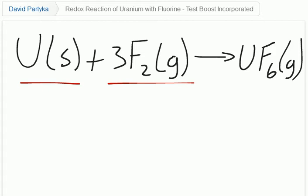Starting with uranium, we see it's just uranium metal, and therefore it has an oxidation state of zero. For fluorine, it's fluorine gas, fluorine in its standard state, and so therefore fluorine has an oxidation state of zero as well.